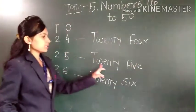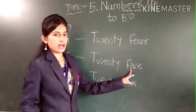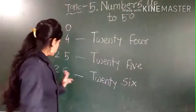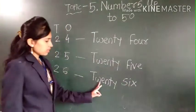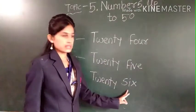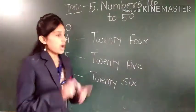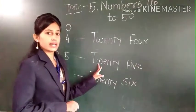25. T-W-E-N-T-Y, 25, F-I-V-E, 5. 26. T-W-E-N-T-Y, 26, S-I-X, 6. You have to learn 20's spelling.